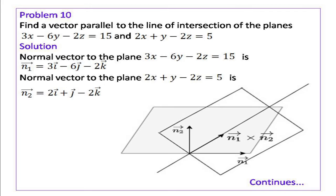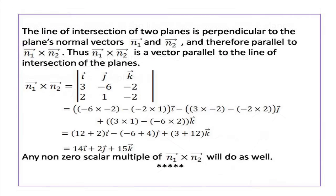So, the vector we have to find is vector n1 cross vector n2. Vector n1 cross vector n2 equals the determinant with rows: i j k; 3 minus 6 minus 2; 2 1 minus 2. Which on simplification gives 14i plus 2j plus 15k. Any non-zero scalar multiple of this vector n1 cross n2 will also be parallel to the line of intersection of these two planes.